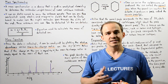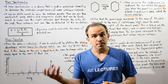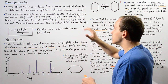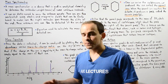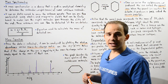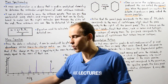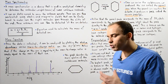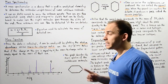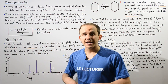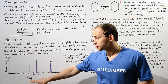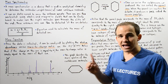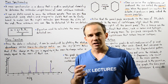The y-axis of the mass spectra designates the relative abundance, which depends on the intensity of the ion colliding with the ion detector. The x-axis designates the mass-to-charge ratio, m divided by q, where m is the molecular mass and q is the charge. Since the charge of our ion is usually +1, m divided by +1 equals m, so the x-axis effectively designates the mass of our molecule.